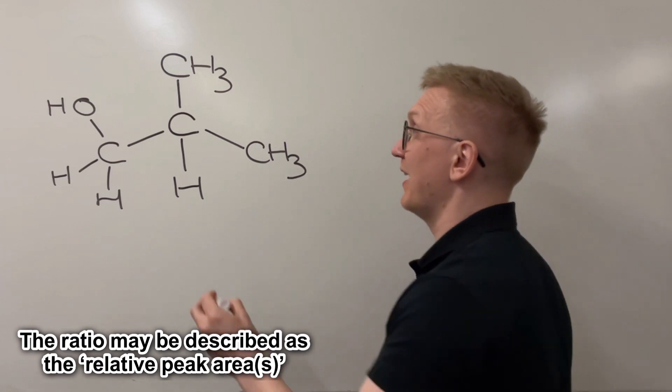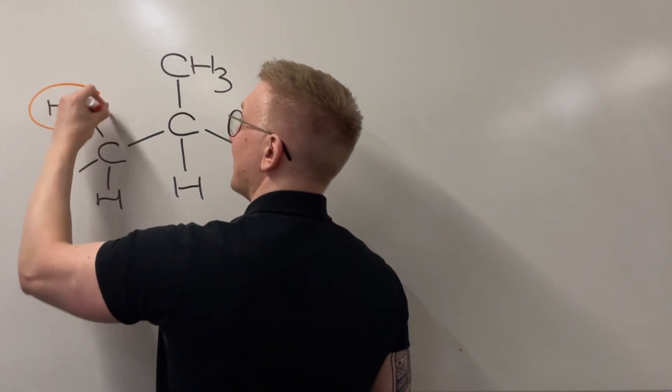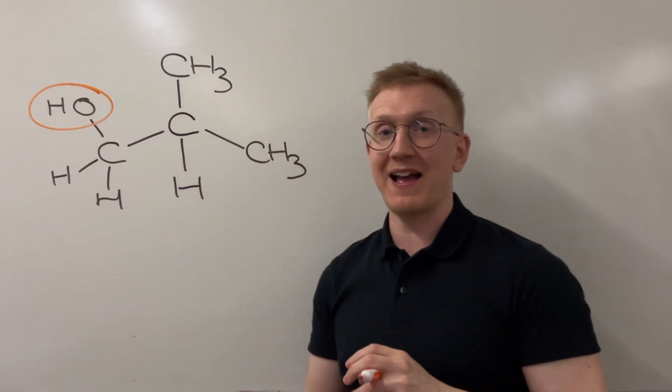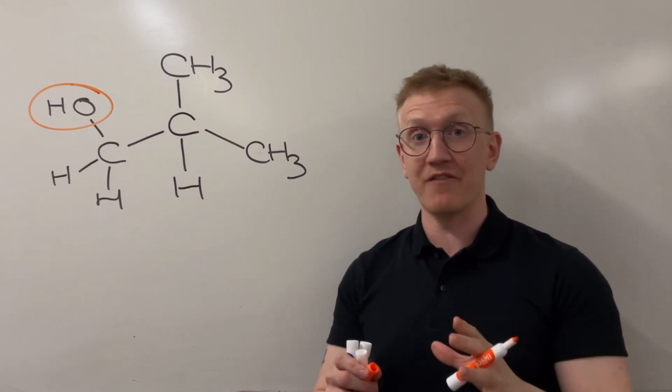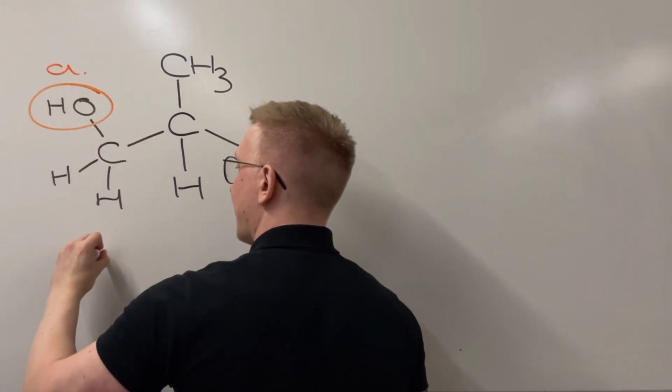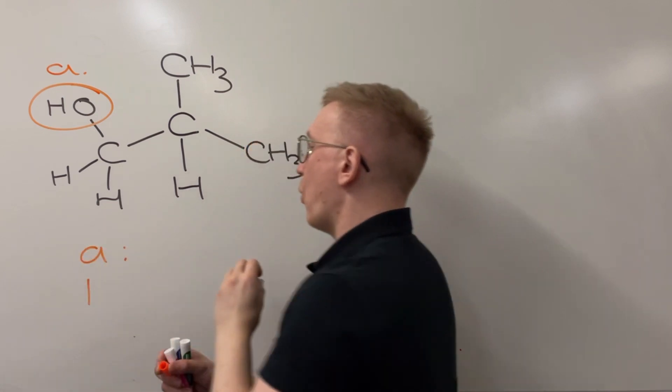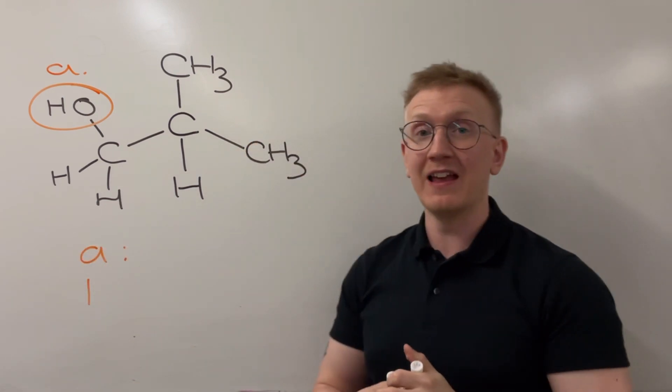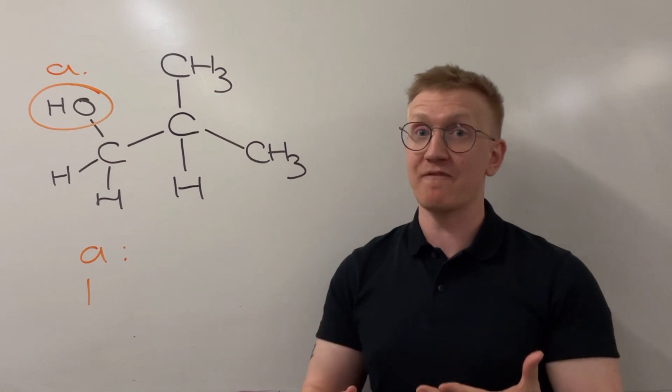My first environment is going to be here for this OH group. That is a standalone hydrogen environment, so I'm going to say that's environment A, and I'm going to say for A it's going to have a one ratio compared to the other peaks because there's one hydrogen within that environment. It's an incredibly useful bit of information if you get this in the exam.